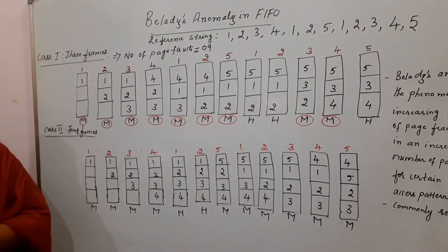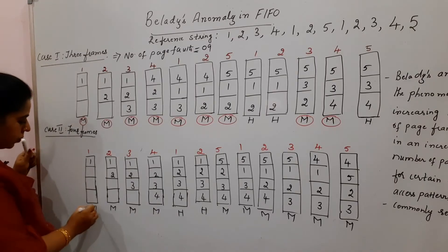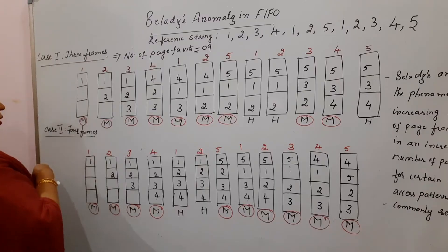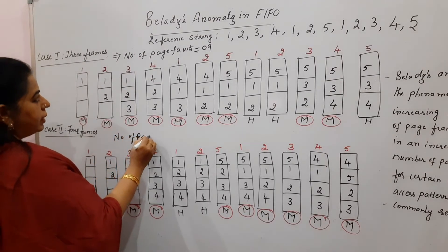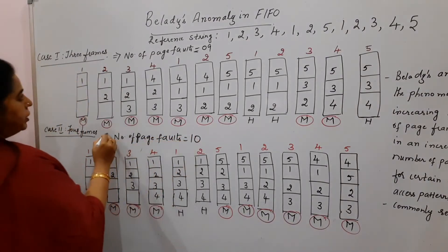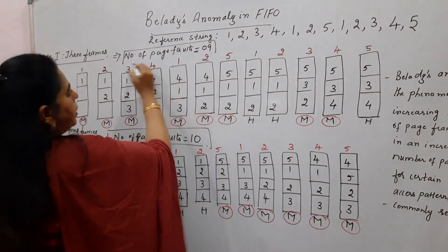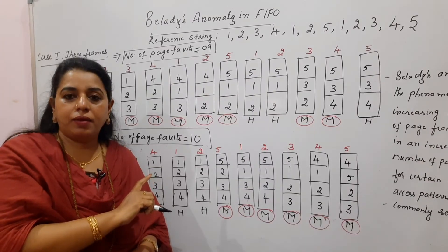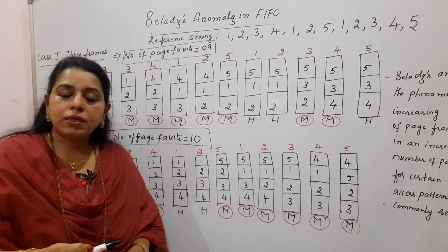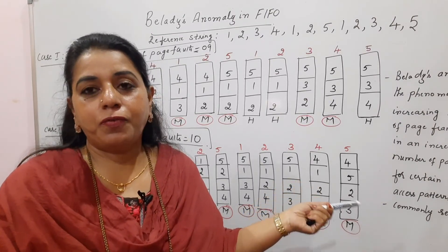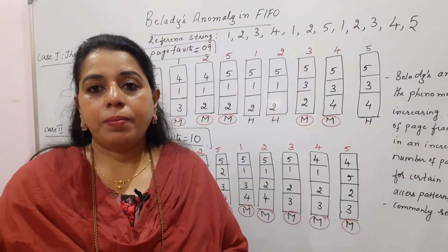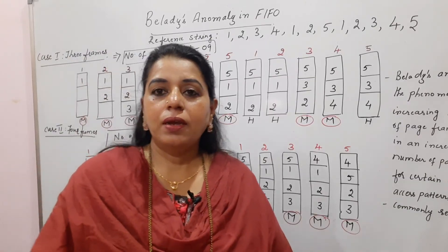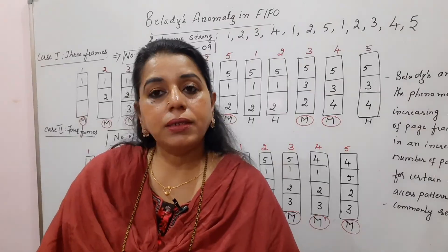Count the number of times 'M' (miss) appears in Case 2: 1, 2, 3, 4, 5, 6, 7, 8, 9, 10 — the number of page faults equals 10. Comparing Case 1 (3 frames = 9 page faults) and Case 2 (4 frames = 10 page faults), Belady's Anomaly is confirmed — as the number of frames increases, the number of page faults also increases. This question is typically asked for 4 to 5 marks, and this phenomenon only exists for certain memory access patterns and is commonly experienced in FIFO.